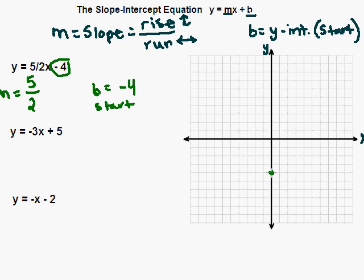After I have my starting point plotted, I can take a look at my slope. This is a positive 5, so that tells me I'm going to go up 5. This is a positive 2, so this tells me my run is going to the right 2. From that starting point of negative 4, I'm going to go up 1, 2, 3, 4, 5 and to the right 1, 2. And there's a second point on my graph.